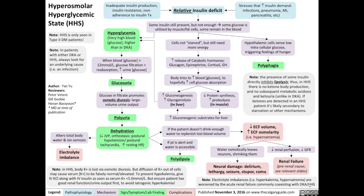Note what pathophysiology is missing in the pathogenesis of HHS as opposed to DKA. What's missing is lipolysis, because the presence of some insulin — not much, not enough, but some insulin — will directly inhibit lipolysis. So in HHS, there is actually no ketone body production and no subsequent metabolic acidosis and ketonuria, unlike in DKA. If ketones are detected in an HHS patient, it's likely because of starvation or other mechanisms, and not because the patient is in DKA.